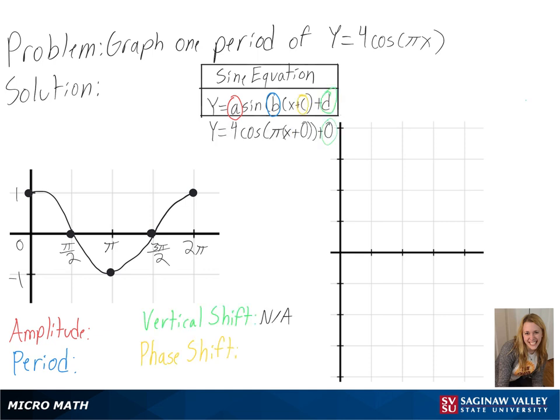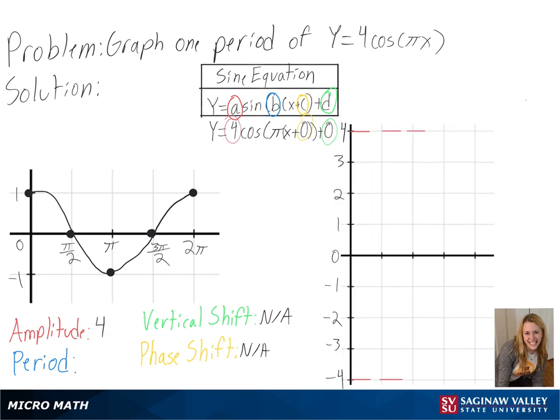We can see that we don't have a vertical shift or a phase shift, but can see our amplitude is 4, so our highest and lowest points will be 4 units from the center.